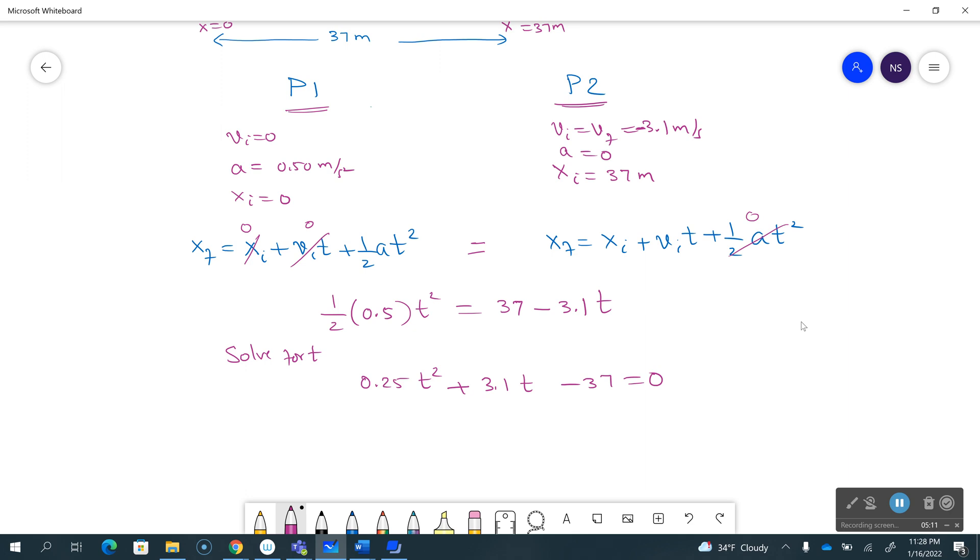If I say solve, I get time t to be 7.4543 seconds and then the other time is negative, t equals negative 19.854 seconds. I can throw away the negative time.